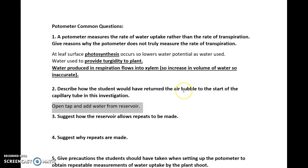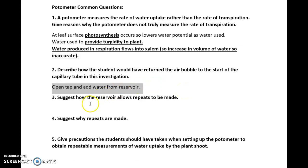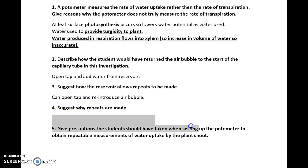Describe how the student would have returned the air bubble to the start for the period of the investigation. How would you reset it? You basically just open the tap and you add more water. Suggest how the reservoir allows repeats to be made—it's the fact that you can, again, open the tap. Suggest why we take repeats. This is an obvious answer, so that you can find anomalies and repeat them. You can find out where it could have potentially not had a result that was typical of the population.